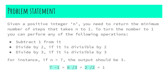For instance, say if our n value is seven, the output we should give is three. Because first I can reduce seven by one to obtain six, then divide it by three to obtain two, and then divide two by two to obtain one. Therefore I have totally taken three steps to turn my seven into one. Let's look at the solution approach.